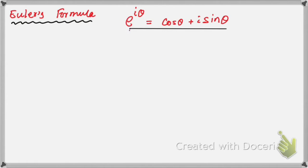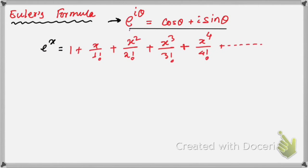In order to prove this formula, we must know three very important results. The first is: e to the power x is equal to 1 plus x by 1 factorial plus x squared by 2 factorial plus x cubed by 3 factorial plus x to the power 4 by 4 factorial, and so on.